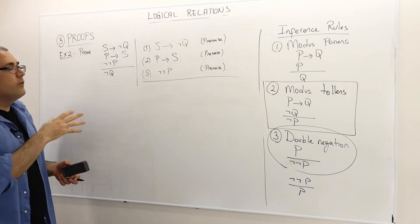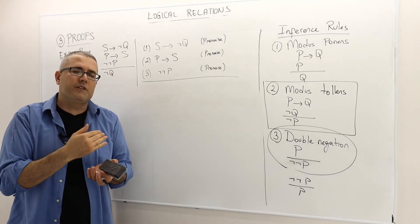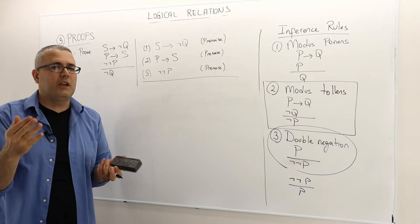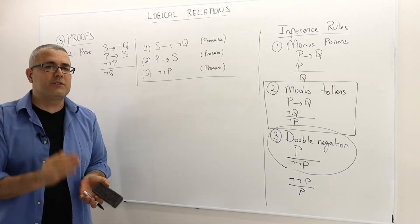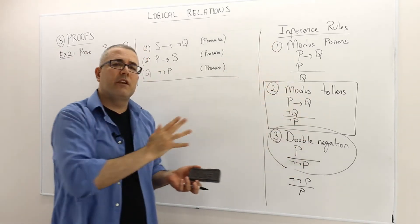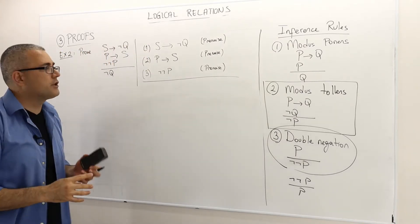Alright, you can prove this again, you can show the validity of this argument by using the truth table, but let's not do it. Let's use the direct proof and let's use those three inference rules that we just learned.